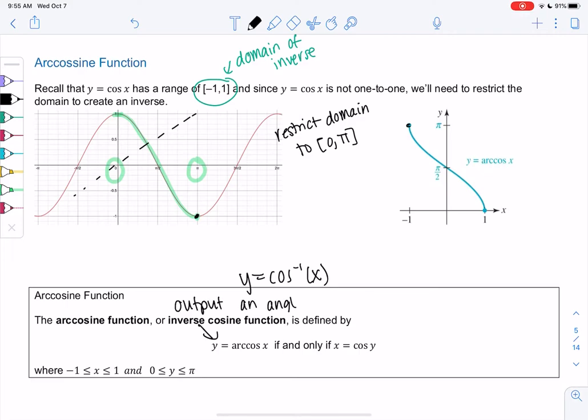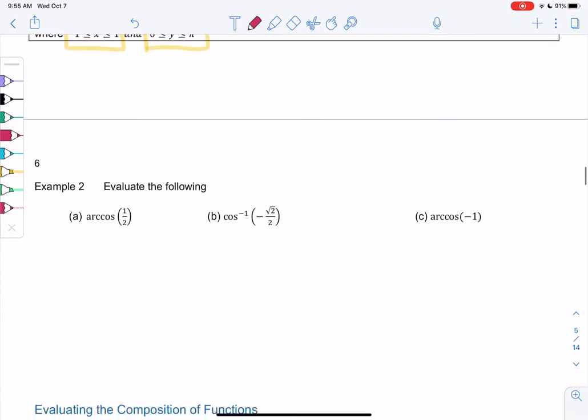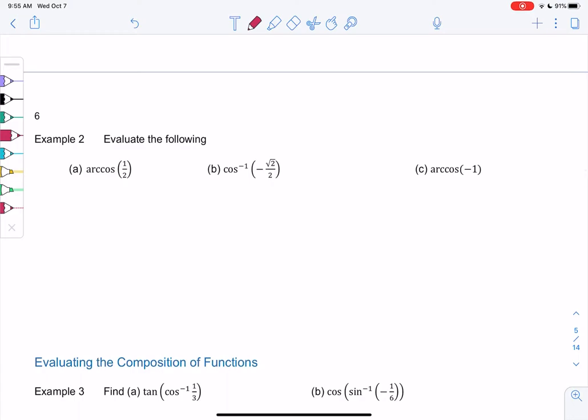And the only big difference is the range. So my domain is the same. Range is now 0 to π. Otherwise, it's very similar. So let's evaluate a couple of these. Do not use your calculator because it doesn't give you exact values. So we're going to find exact values only. Avoid the temptation of using a calculator.